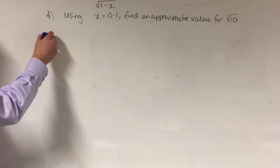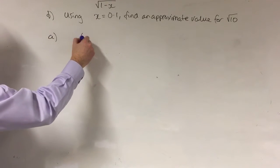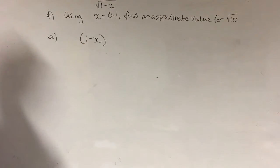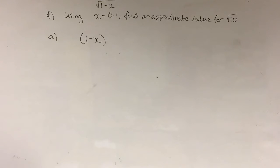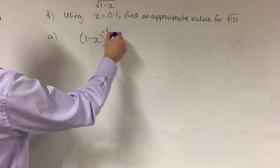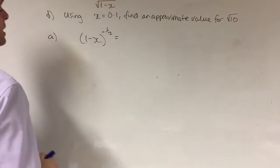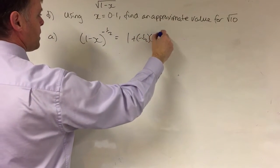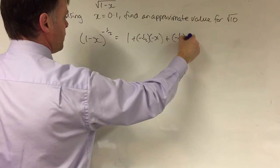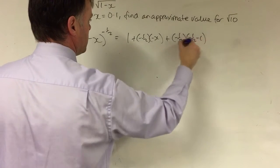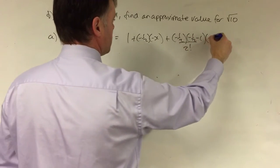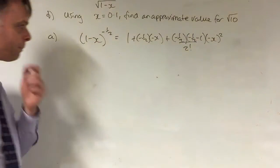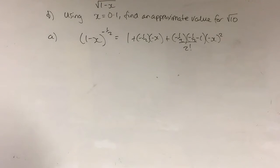So part A, let's do that quickly first. 1 over the square root of 1 minus x is equal to (1 minus x) to the power of minus one half. Then we just follow the standard formula — we want the first three terms. So we've got 1, minus one half times minus x, plus (minus one half, minus 1) over 2 factorial times minus x squared.